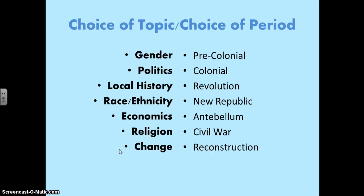It begins with a choice of topic and a choice of period. There are many topics and themes that you can choose in United States history, and I have listed a few here: gender, politics, local history, race and ethnicity, economics, religion, and change.